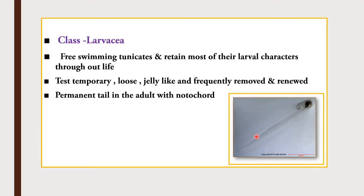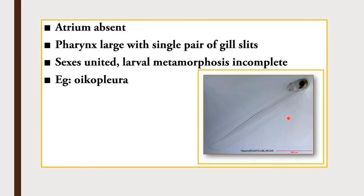Class Larvaceae — you can see the picture here — is a free-swimming tunicate that retains most of its larval characters throughout life, hence the name Larvaceae. There is a temporary loose, jelly-like test that is frequently removed and renewed. A permanent tail with a notochord is present in the adult, which is absent in class Ascidiacea. The atrium is absent, the pharynx is large with a single pair of gill slits, sexes are united, and larval metamorphosis is incomplete.